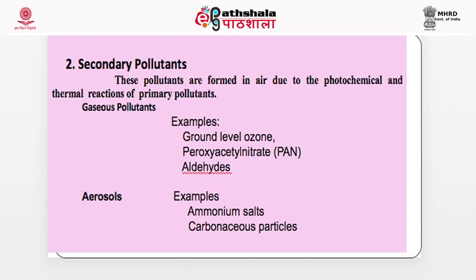Secondary pollutants are not directly released into the air, but are formed due to photochemical or thermal reactions of primary pollutants among themselves. For example, ground-level ozone is formed by reactions in the atmosphere — oxygen atoms reacting with O₂ gas. Other secondary pollutants include peroxyacetyl nitrate, photochemical smog, aerosol ammonium salts (formed when ammonia reacts with nitric acid to form ammonium nitrate, or with sulfuric acid to form ammonium sulfate), and carbon particles.